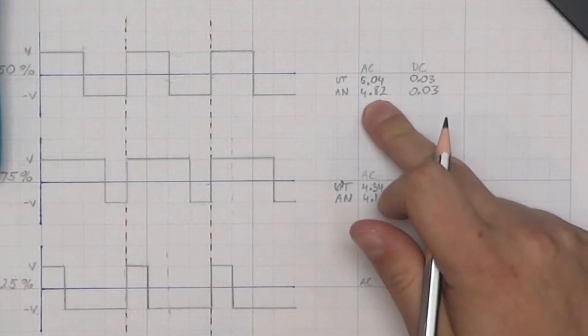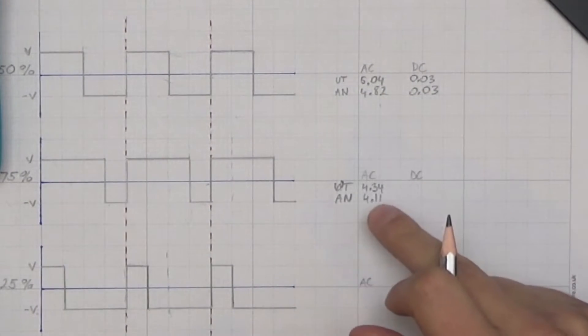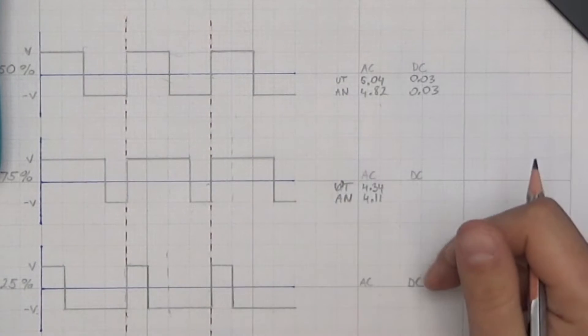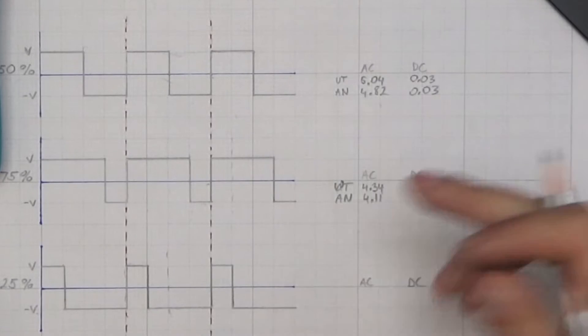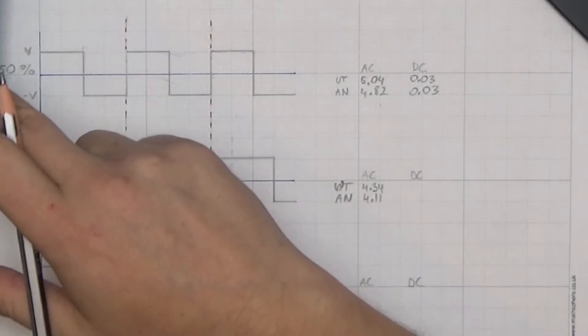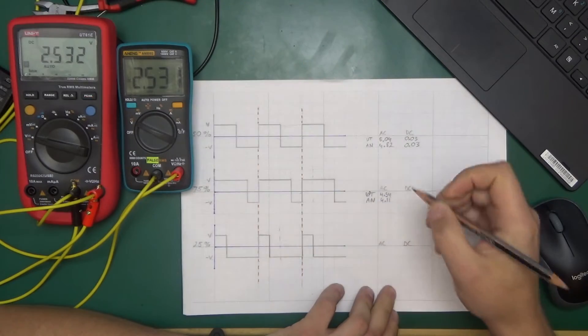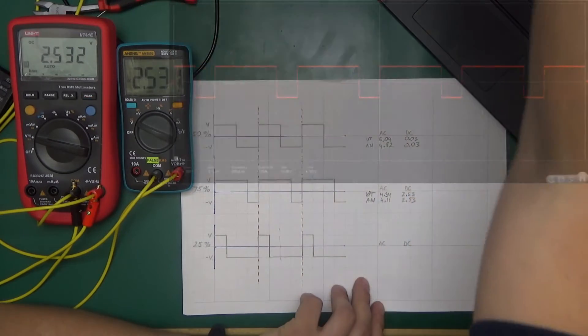Now this is quite a bit off. Before, AC was showing close enough to 5 volts, which would be the correct value, but now it's almost a volt off of what it should be. Remember, the RMS value of this waveform is still 5 volts. So let's check what it's showing on DC: 2.53 volts in both cases. And let's move to 25% duty cycle.